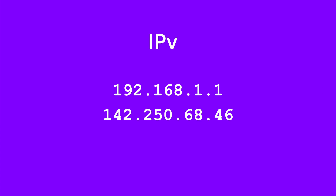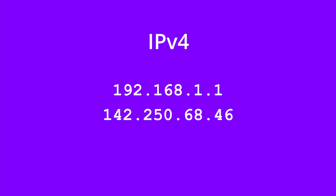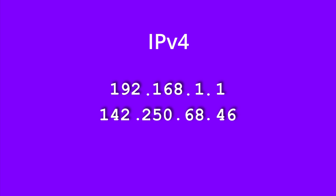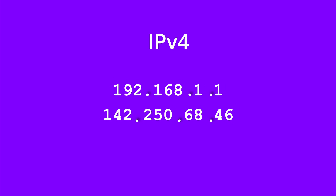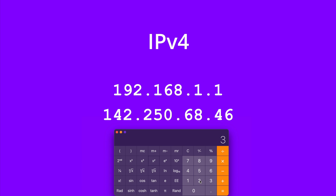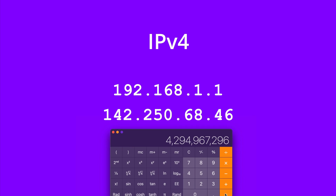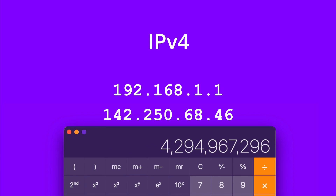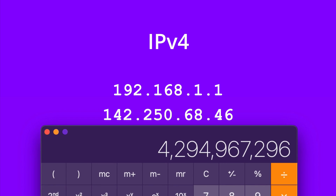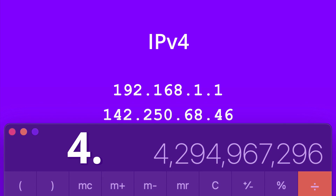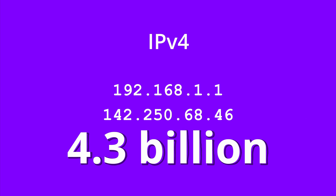These right here are IP version 4 addresses, which are made up of a set of four digits between 0 and 255 that are separated by dots. There are 2 to the power of 32 different combinations of IP version 4 addresses, and if you do the math, that means there are around 4.3 billion unique IP addresses available in the world.